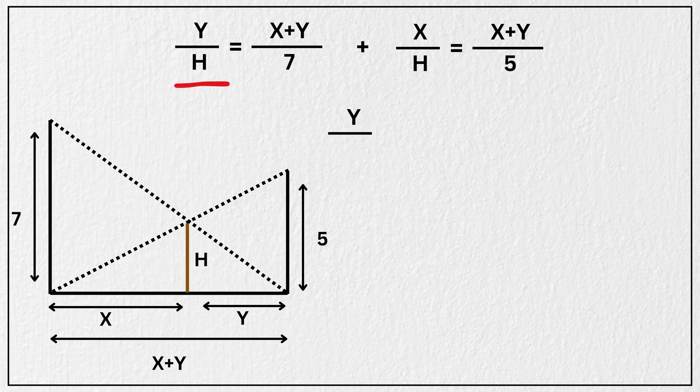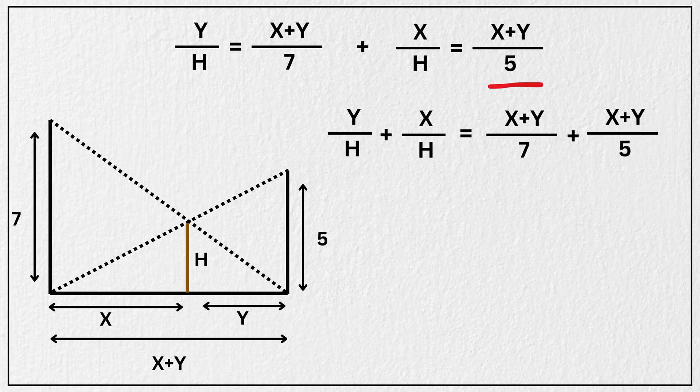we get y divided by h plus x divided by h equal to x plus y divided by 7 plus x plus y divided by 5.